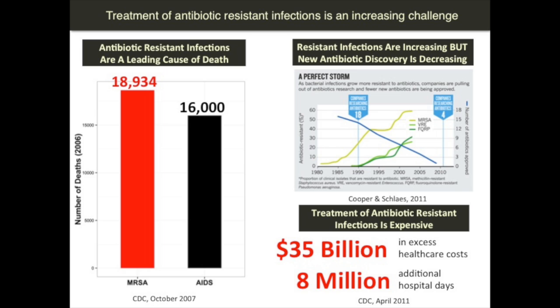And here is the real perfect storm. If you look over time, these lines going up are infection rates from three drug-resistant bacteria. At the same time these bugs have been increasing, the development of new antibiotics — shown in blue — and FDA approvals have been diving. The number of drugs coming to market, the number of drugs being developed by any pharmaceutical company — that's why it's called the perfect storm. You've got more resistance and fewer drugs to hit the resistant bugs.